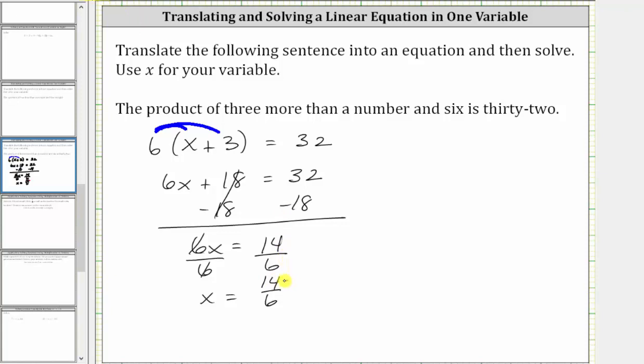To simplify, we divide the numerator and denominator by two. 14 divided by two is seven. Six divided by two is three. X is equal to 7 thirds, which means the number we're looking for is 7 thirds.